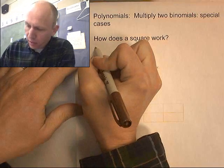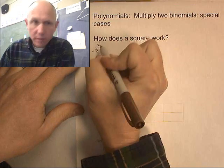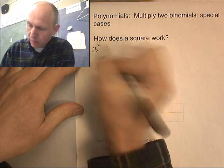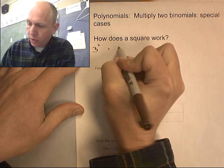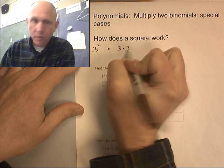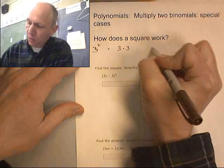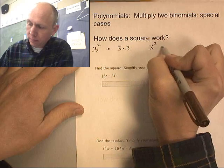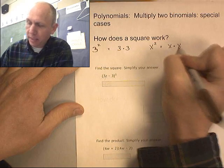What is 3 squared? It's 3 times 3, right? X squared is x times x.